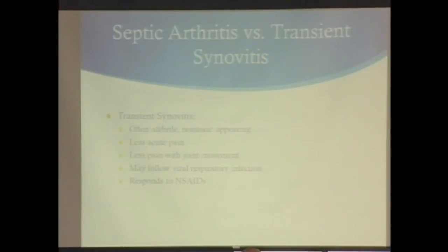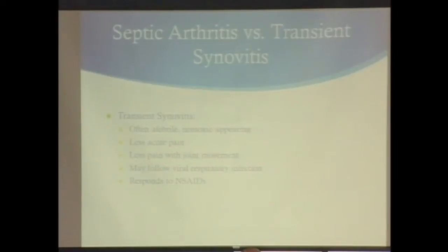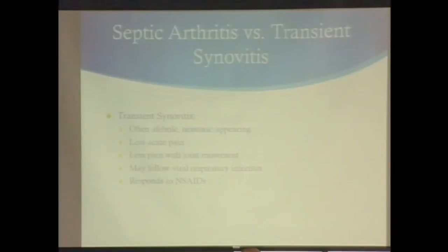Toxic synovitis — patients are often not febrile or only low grade, and don't look nearly as sick. They have less acute pain and less pain with joint movement. That can be tricky, especially with a cranky 18-month-old who won't give a good exam. We see it often as reactive arthritis after a viral infection. Treatment: NSAIDs — a couple of doses of NSAIDs and the patient often feels almost perfect.